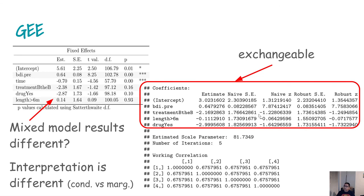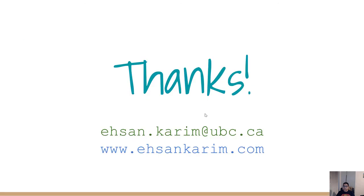To compare the mixed effect model to GEE estimates: the mixed effect model gives a conditional estimate, while GEE gives a marginal estimate. Even though the estimates may look somewhat similar, they are not really comparable because one is marginal and one is conditional. That concludes today's lecture.